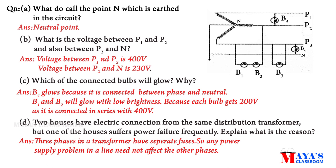Next question D: Two houses have electrical connection from the same distribution transformer, but one of the houses suffers power failure frequently. Explain the reason. Both houses are connected from the same transformer, but one has frequent power failure.